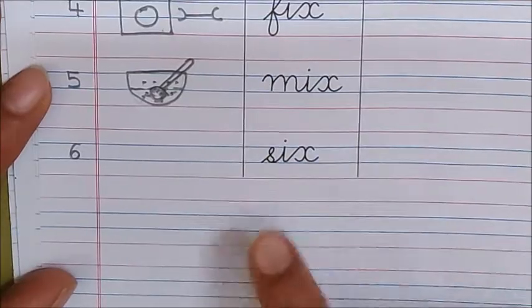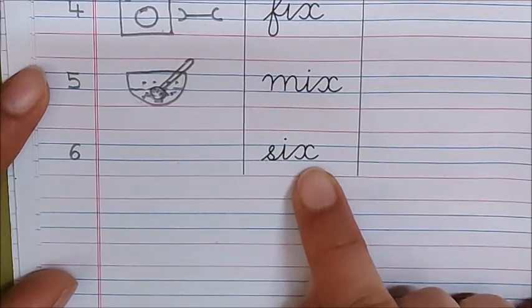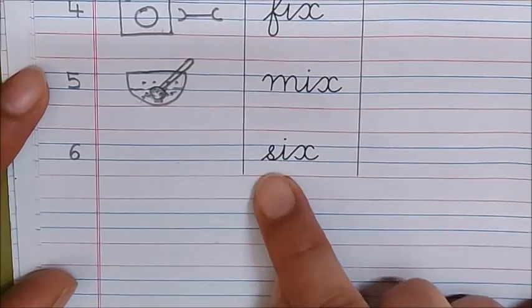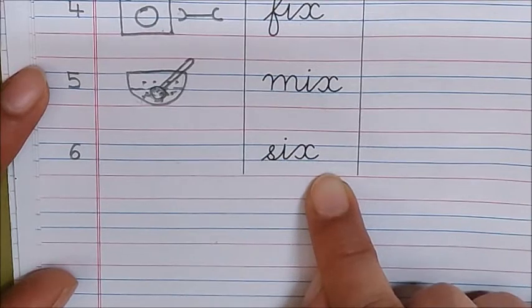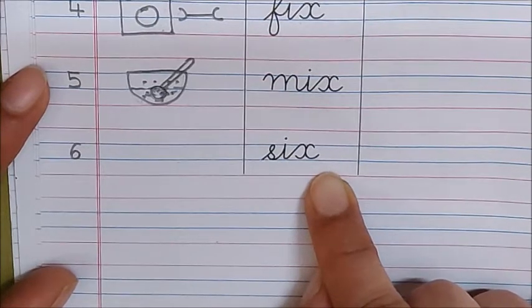M-i-x mix. This is my spoon. I am going to mix it. Mix means milana. I am mixing milk and sugar with the help of spoon. Now let us read the next word. S-i-x. Six. S-i-x. Six. What is six? Six is a number.